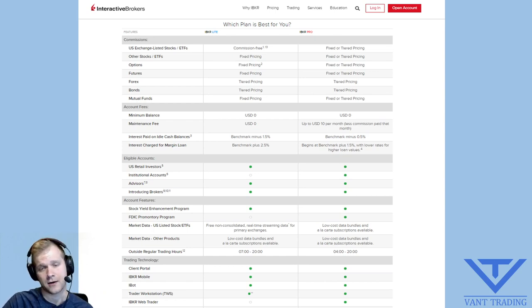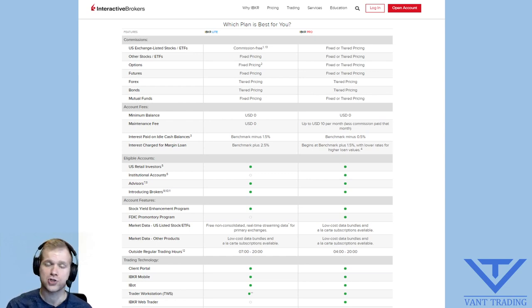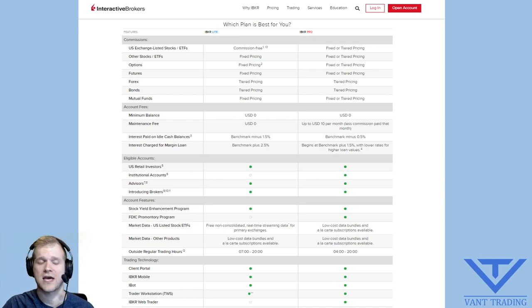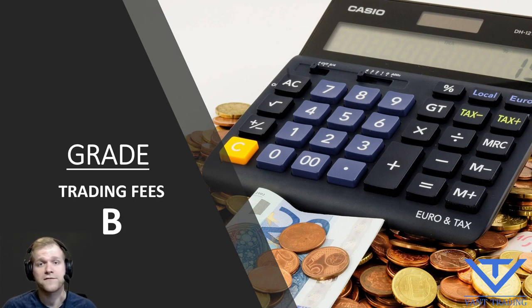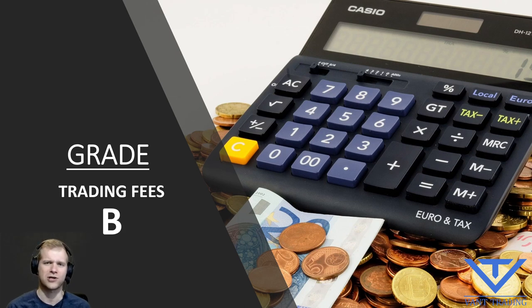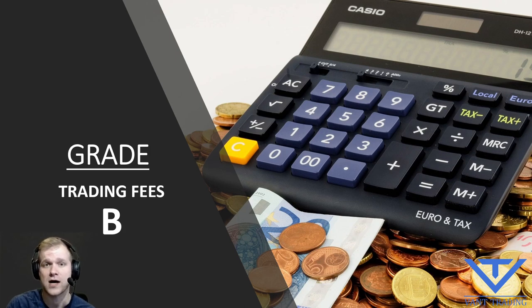Most people watching will probably go down the Interactive Brokers Lite path, which is pretty nice — it's gotten a lot more manageable and relatively competitive with the industry. They're not going the full commit like, say, thinkorswim, who's just gone all free. That's why we're giving their trading fees a B. It's about standard — free commissions and free market data for the average day trader on the Lite account, which is awesome.